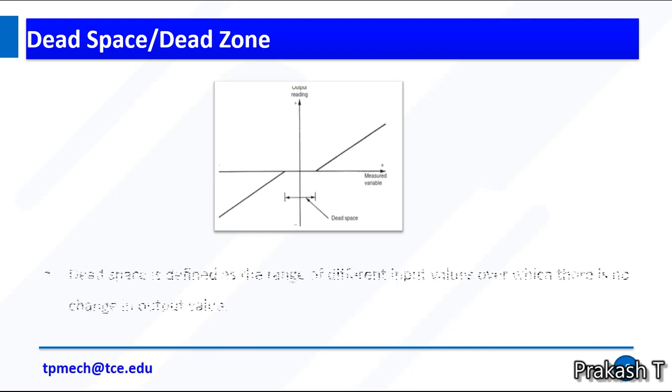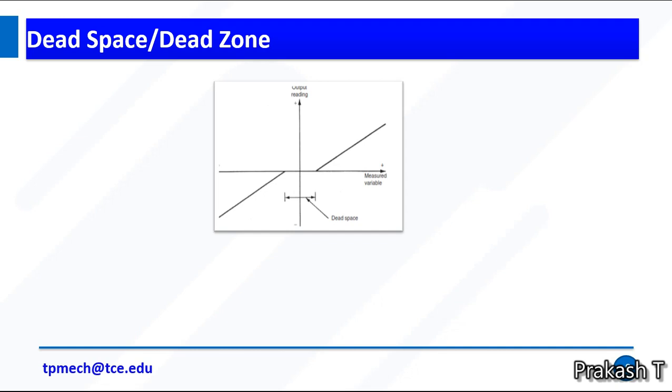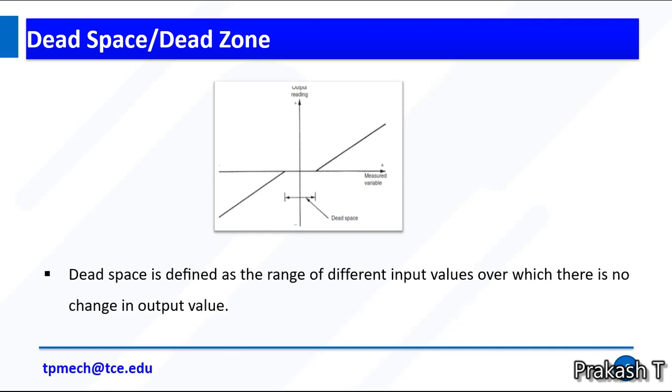Dead space or dead zone is defined as the range of different input values over which there is no change in output value. This is similar to threshold. Dead space means we will give the input but we can't get any output.